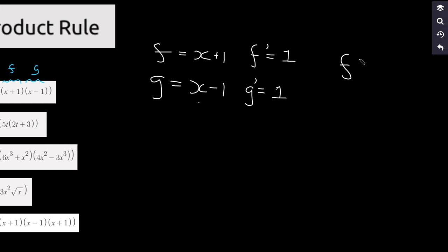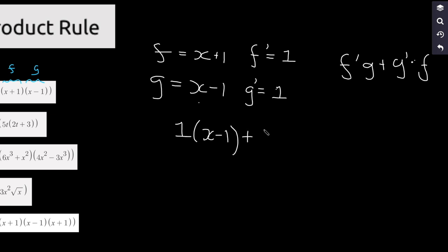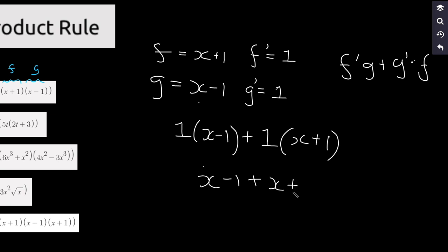The rule is f prime·g plus g prime·f. So f prime is 1 times g which is (x minus 1), plus g prime which is 1 times f which is (x plus 1). Simplifying this expression — it's just algebra — we get x minus 1 plus x plus 1. The two ones cancel out, and we're left with 2x.